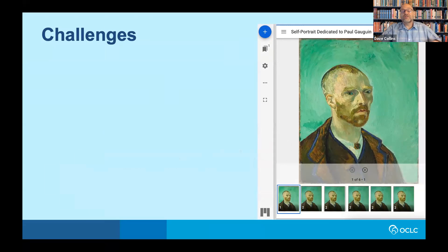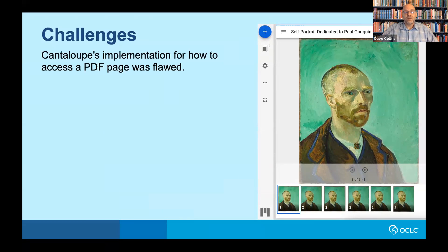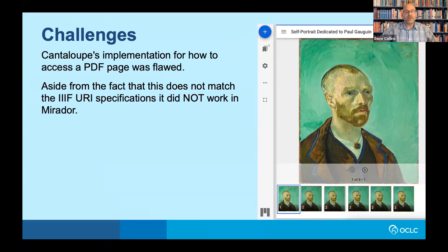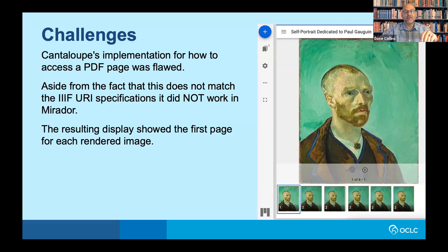When we initially started using Cantaloupe, we faced some challenges. Cantaloupe's implementation for accessing a PDF page was flawed — you would access it by a query string parameter like "?page=15", which does not match the IIIF URI specification. It was a workaround to get PDF support into Cantaloupe, and it does not work in Mirador. What you would see is that every page displayed would be the first page of that PDF in Mirador and other IIIF viewers.